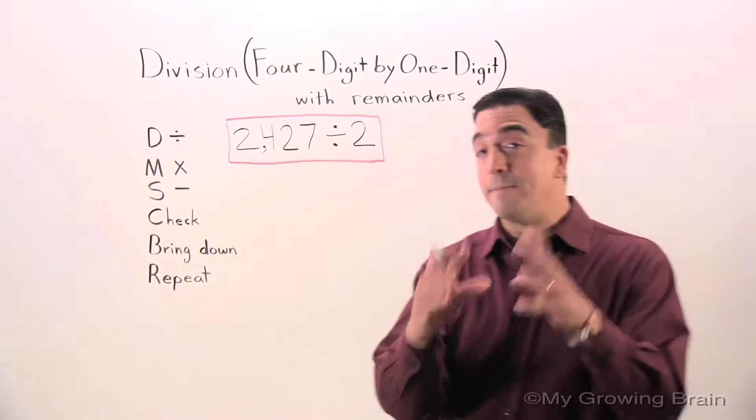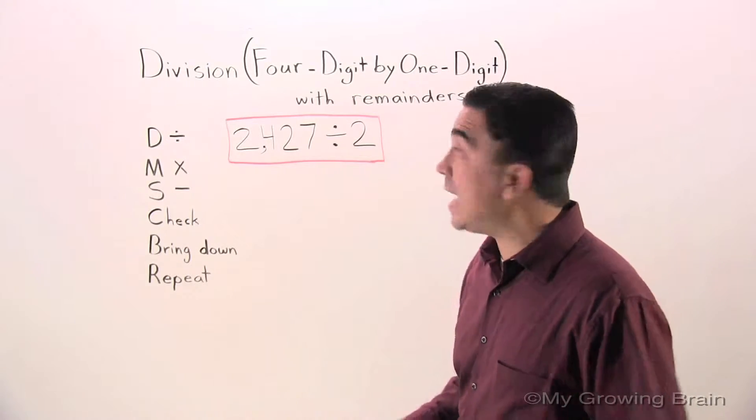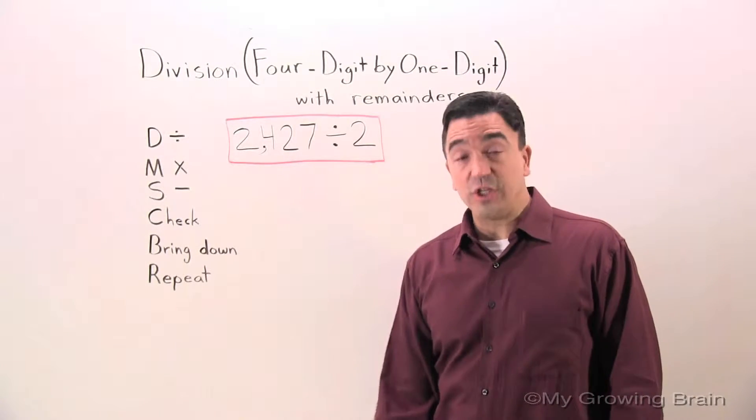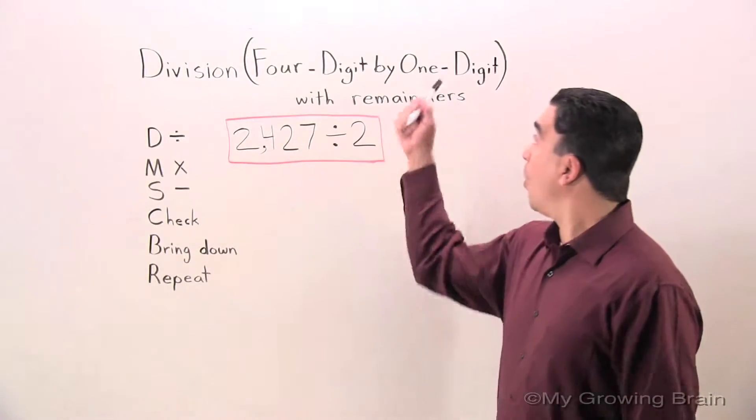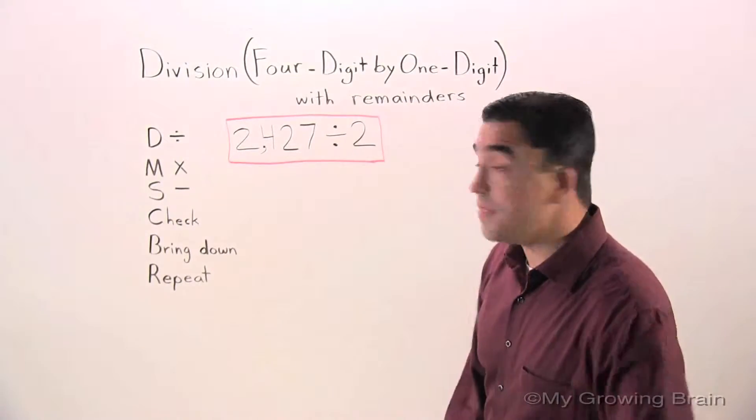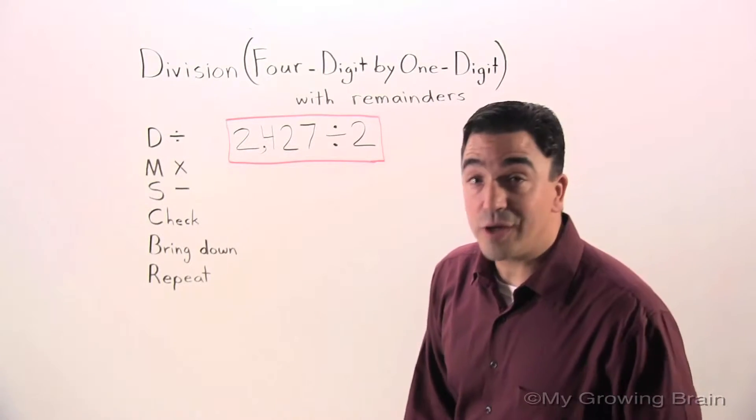Hi there, Coach Mike again from MyGrowingBrain.com and today we'll be working on division. To be more specific, four digit by one digit with remainders. So let's jump into it.